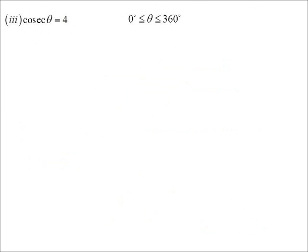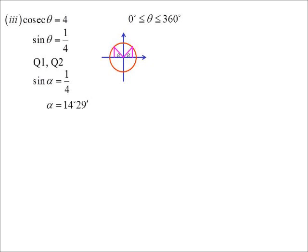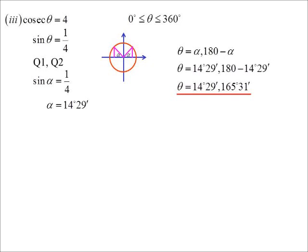Cosec. Of course the problem with Cosec is we don't have a Cosec button on our calculator. So the first thing we do is turn it into sine theta equals a quarter and it's positive. So we're in the first or the second quadrant. Locate the acute angle. Put it all together. So we're either alpha or 180 minus alpha. There's our answers.